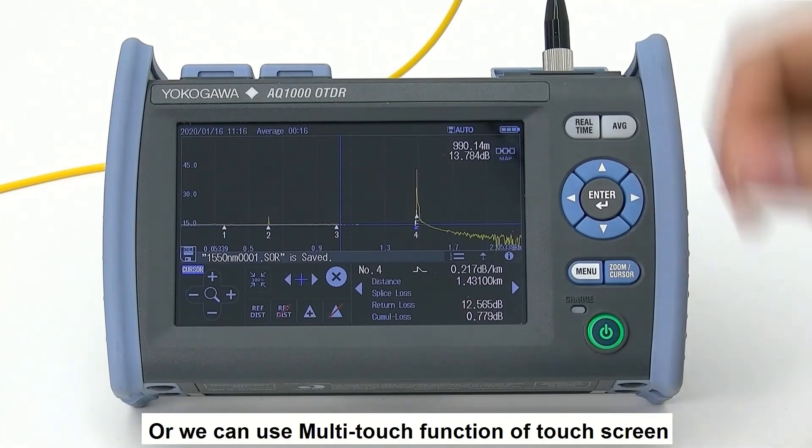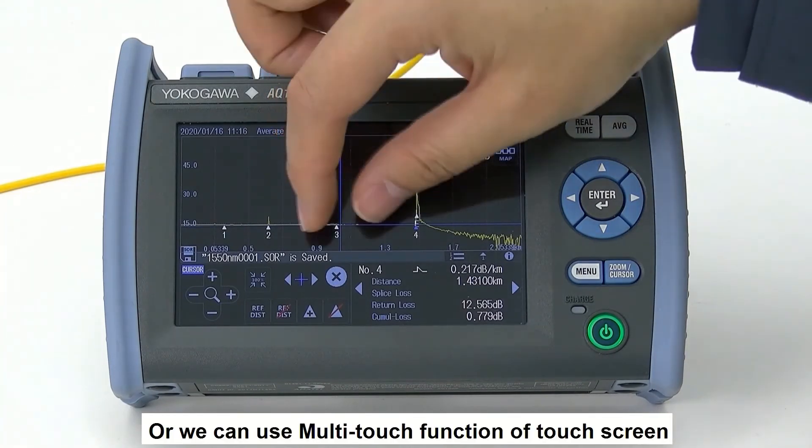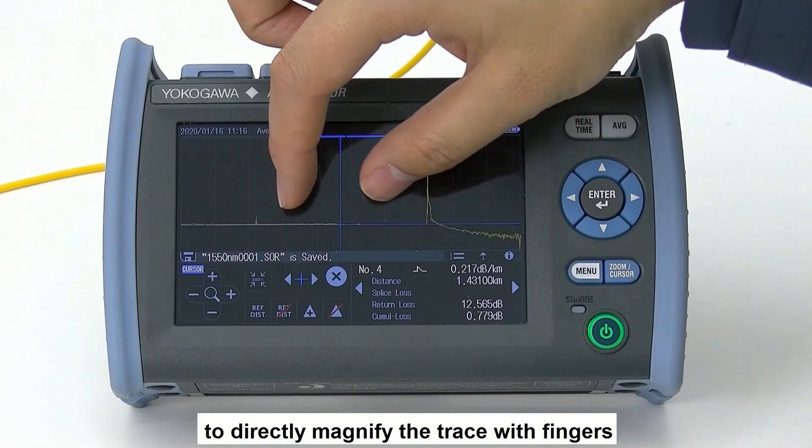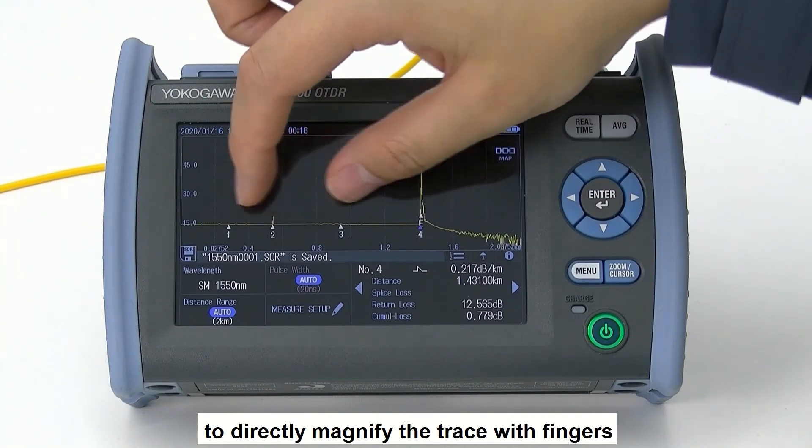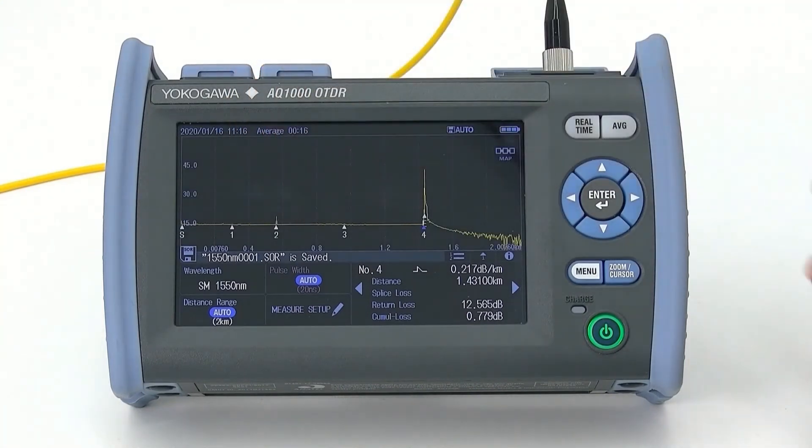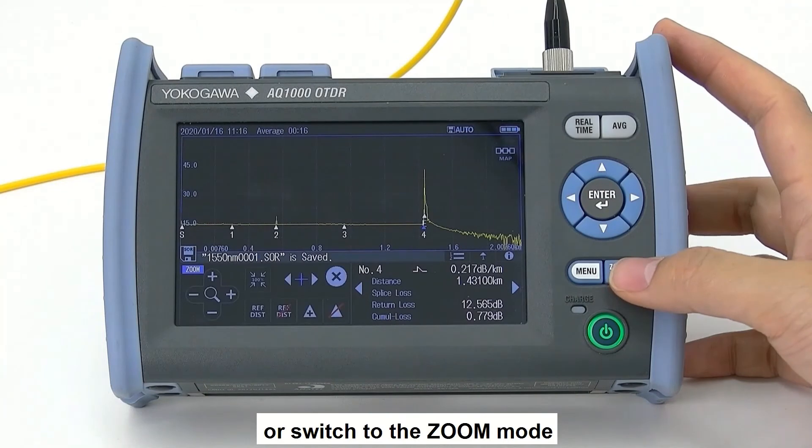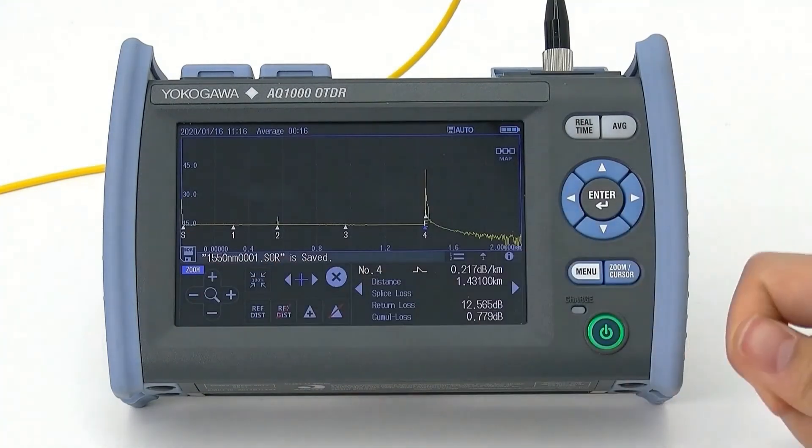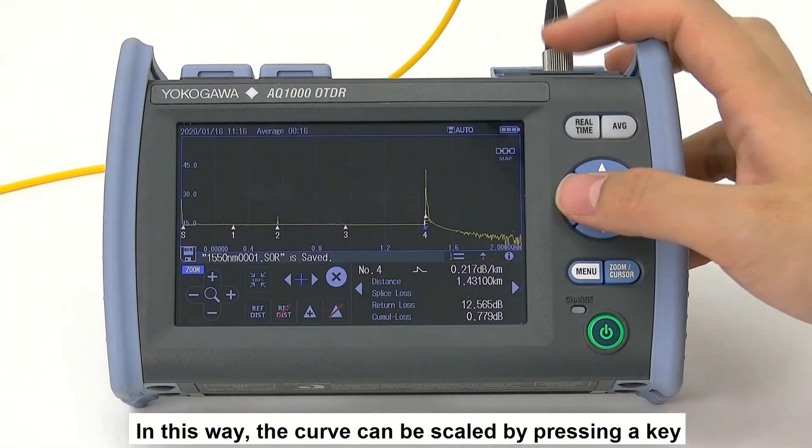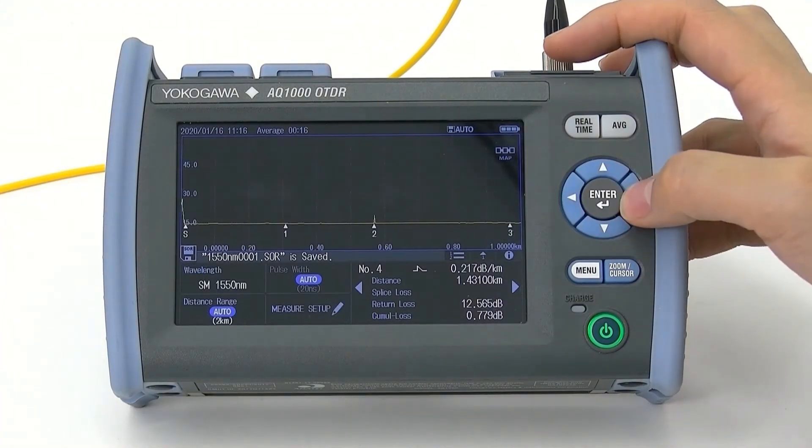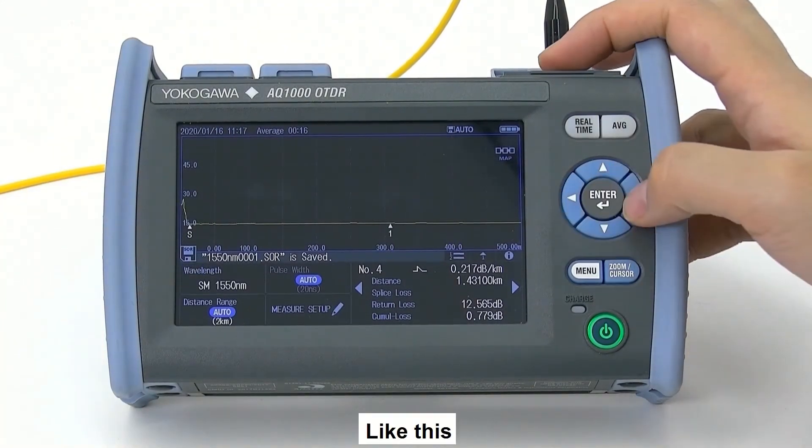Or we can use the multi-touch function on the screen to directly magnify the trace with the finger, or switch the cursor to zoom mode. In this way, the trace can be scaled by pressing a key, like this.